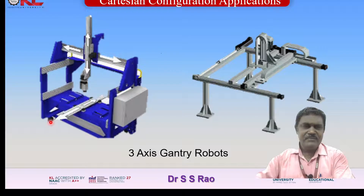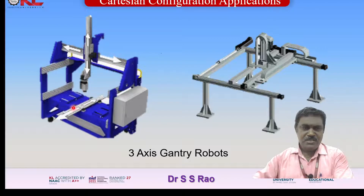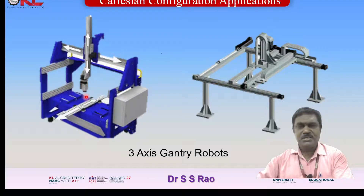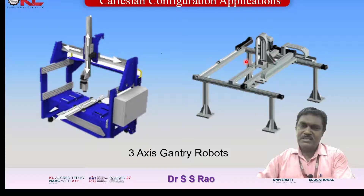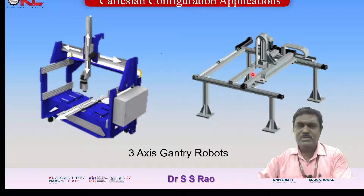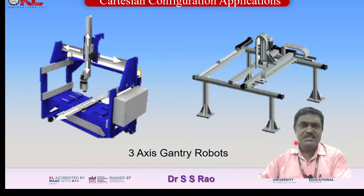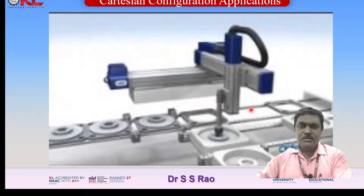Now let us see some applications. Here is a robot with three axes — Z axis, X axis, and Y axis — and with reference to these three motions, the end effector can reach any required position. Another example is the three-axis gantry robot: the gantry crane moves along one direction, the device moves in another direction, and it also moves up and down by applying respective motors. For a clearer understanding of Cartesian configuration, let us watch a video.